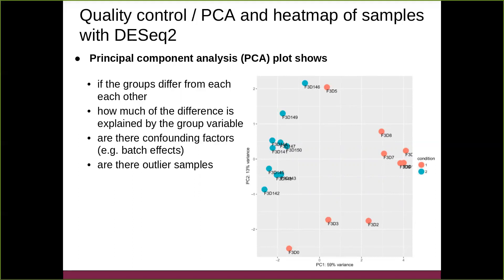PCA is a very useful tool for finding out if groups differ from each other in terms of species composition. We can also use this to get an idea of how much of the difference is explained by the group variable. Looking at the x-axis — PC1 — we can see a quite clear split in terms of groups, and 59% of the variance is explained by this first axis.